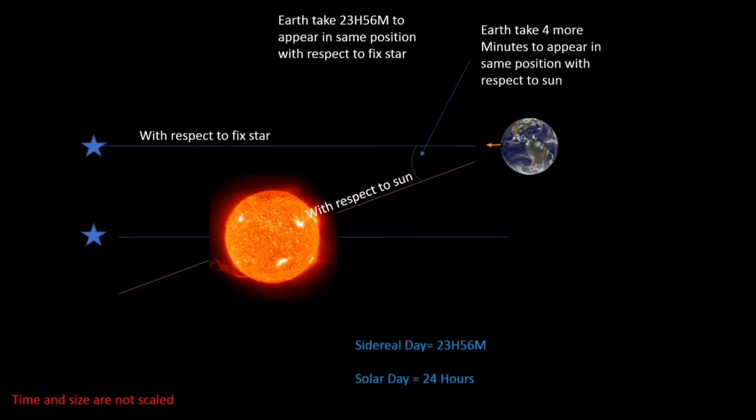While the sun takes 4 more minutes to appear in the same meridian point, which is known as a solar day. And because of that, solar day is 24 hours long.